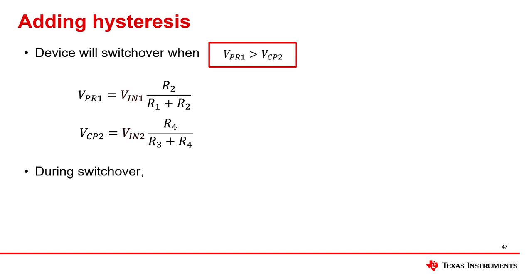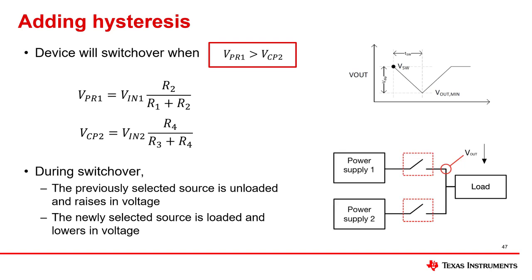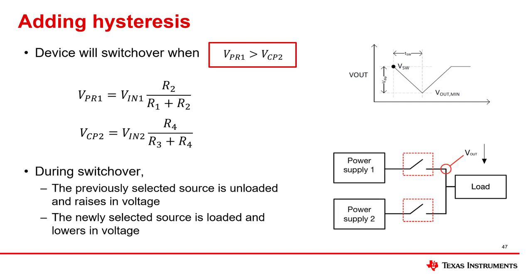When one device switches from another, the unselected supply will slightly rise in voltage as it is unloaded, and the loaded supply will slightly drop in voltage. In a break-before-make configuration, when the device switches from one source to the other, it disconnects from both input paths to ensure there is no reverse current flow. The PR1 and CP2 comparator is quite sensitive, so if the input voltages are not stable, the PR1/CP2 comparison will occur repeatedly, causing the device to keep switching between inputs. During fast switchover there is no soft start or current clamping, so if your output capacitance is quite large or your input voltage is unstable, you could have an inrush which will flow through the device and could cause the input voltage to dip noticeably.